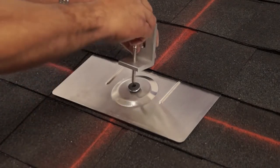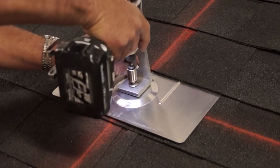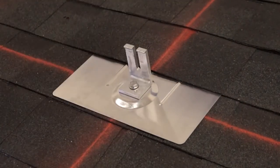Then insert the lag bolt through the washer, L-foot, and flashing, and tighten until fully seated. The FlashFoot is now installed and ready for IronRidge rails.